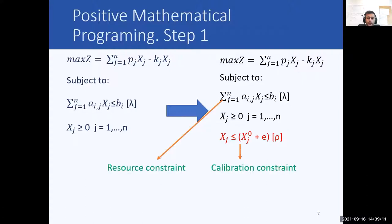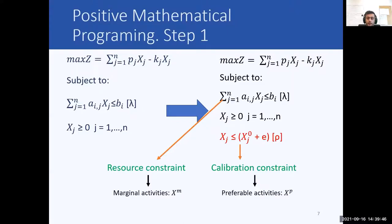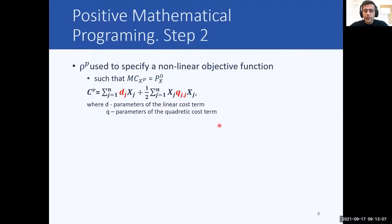We can differentiate between two types of constraints: the resource constraints and the calibration constraints. Our activities X can be divided into two groups: marginal activities, which are constrained by the resource constraints and have dual values of zero for their calibration constraints; and preferable activities, which are constrained by the calibration constraints. In the second step, the dual values of the preferable activities are used to modify the objective function such that marginal cost equals price at the base year.